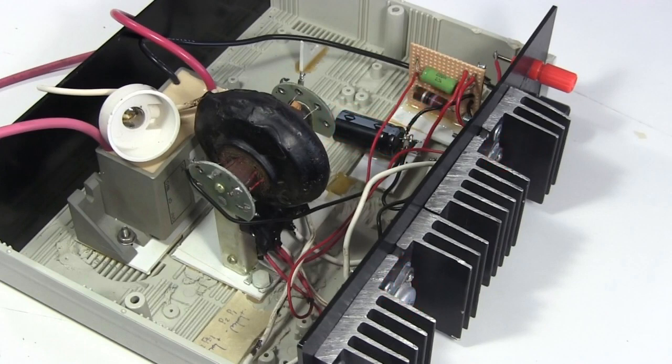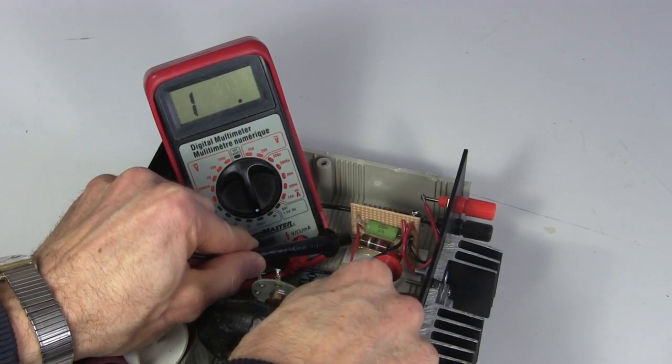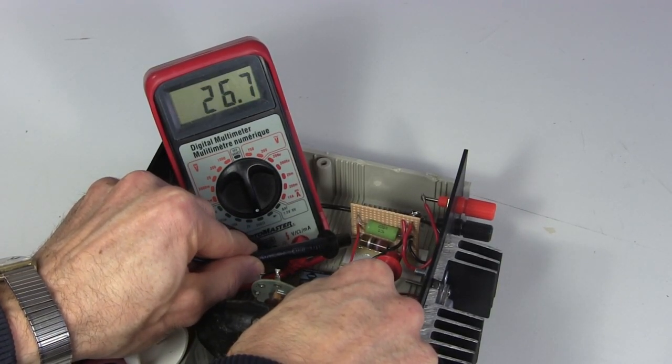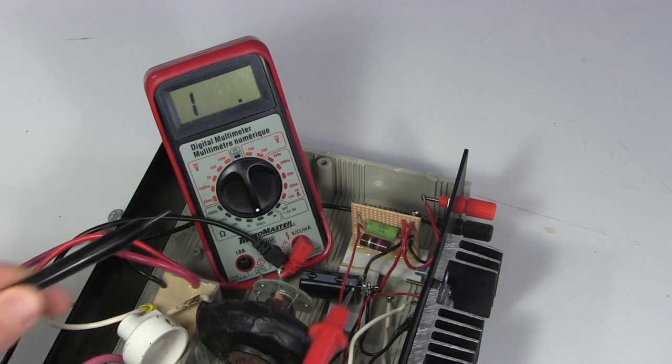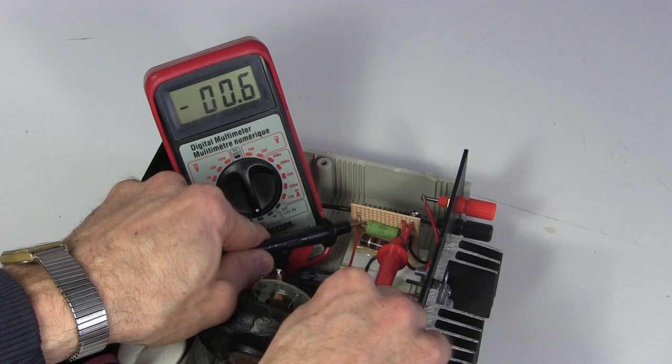So I next start measuring the resistance of these two resistors. Often you have to remove them from the circuit to test them. But this bottom one shows the correct resistance without removing it. The top one, however, should have shown 220 ohms, and instead it shows 0.3 ohms.